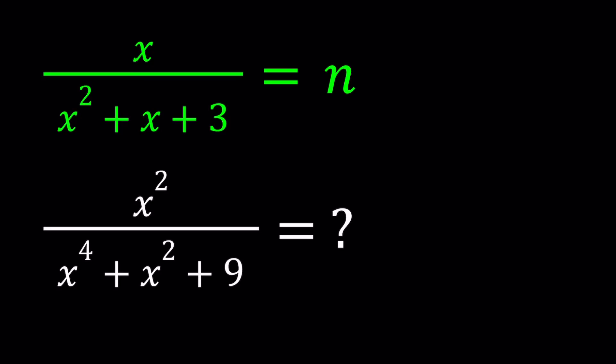Hello everyone. In this video we're going to be dealing with rational expressions. We're given that x divided by x squared plus x plus 3 equals n, and we're supposed to evaluate x squared over x to the fourth plus x squared plus 9 in terms of n.